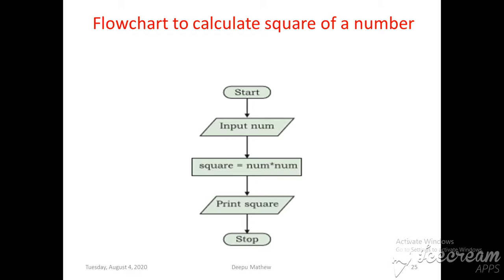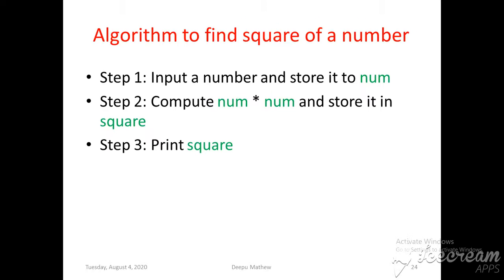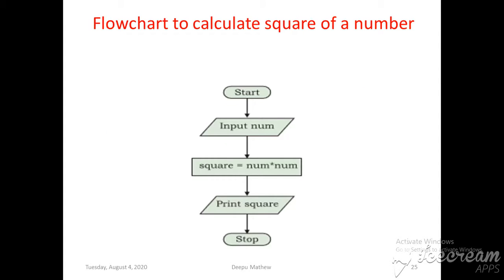So 'square = num × num' goes inside the rectangle box. The next step is to print the square — printing also uses the parallelogram, since input and output both use parallelogram symbols. Finally, after printing we stop the flowchart using the oval symbol with 'Stop'.